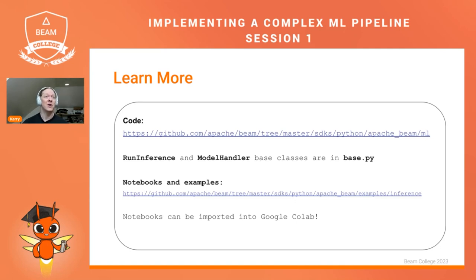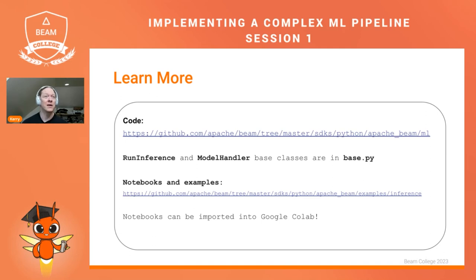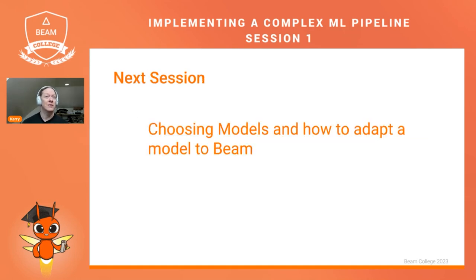You can look at all the code in our open source Apache Beam repository under Python Apache Beam ML. The RunInference and model handler base classes are both in base.py in that directory. We also have numerous notebooks and examples showcasing our many model handlers in our GitHub repository under the examples inference directory. You can import those notebooks directly into Google Colab and execute them locally, including using a T4 GPU. Join me again in our next session, where we discuss choosing models and how to adapt a model to Beam. Thank you very much, I'm Kerry, and it's been a pleasure.